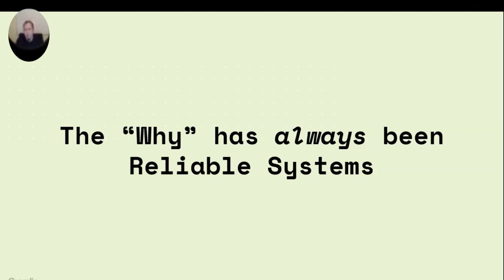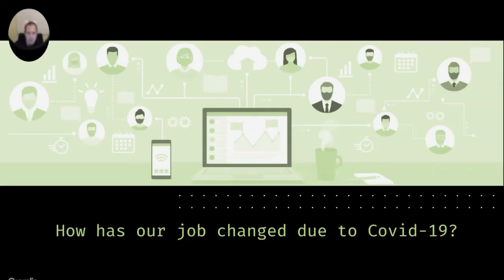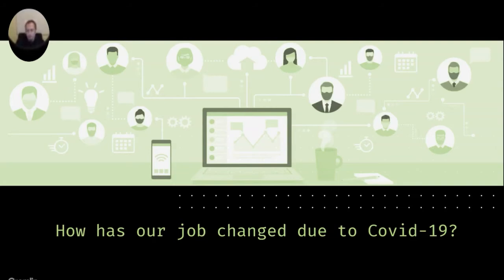Obviously it's been an interesting year. The question for this group — not in the broader sense of how COVID has impacted your life, because it's impacted all of our lives — is how has it changed the way we approach reliability? How does it affect the way we operate our systems? This could be working from home instead of being in the office, having to VPN into your systems when before you had direct access, or being on a conference bridge in the middle of the night with a different set of tools.